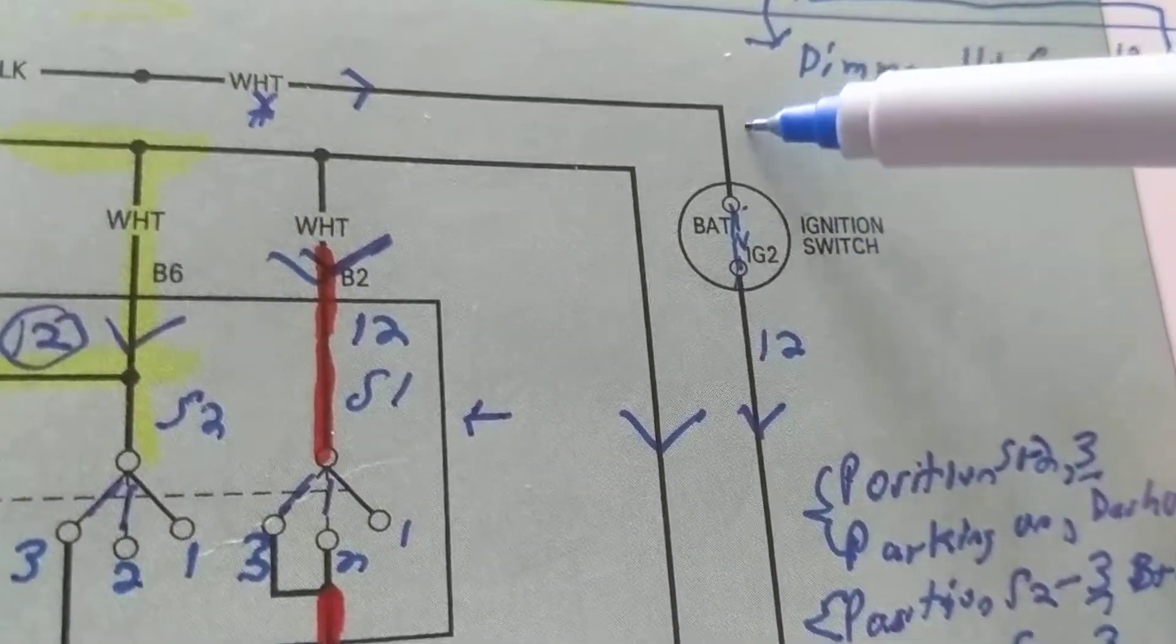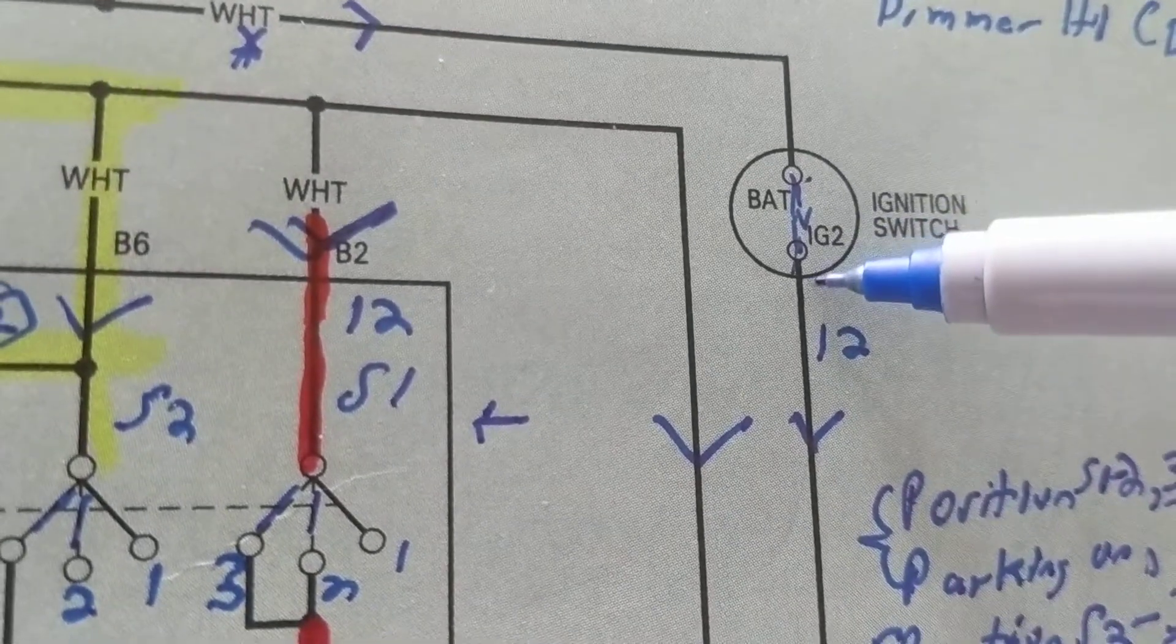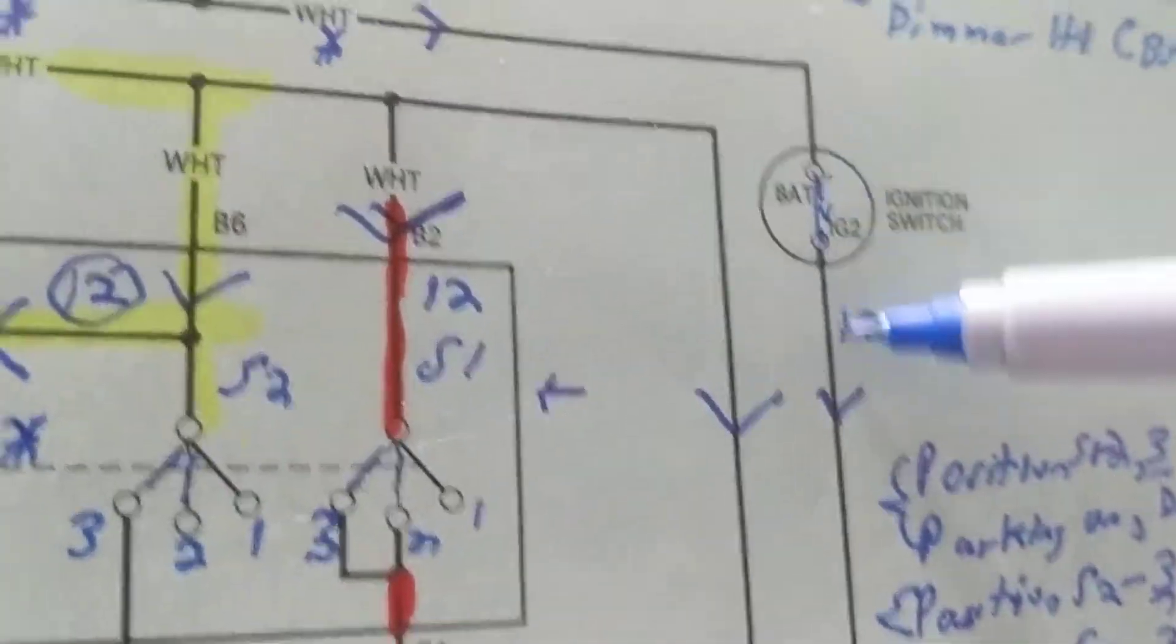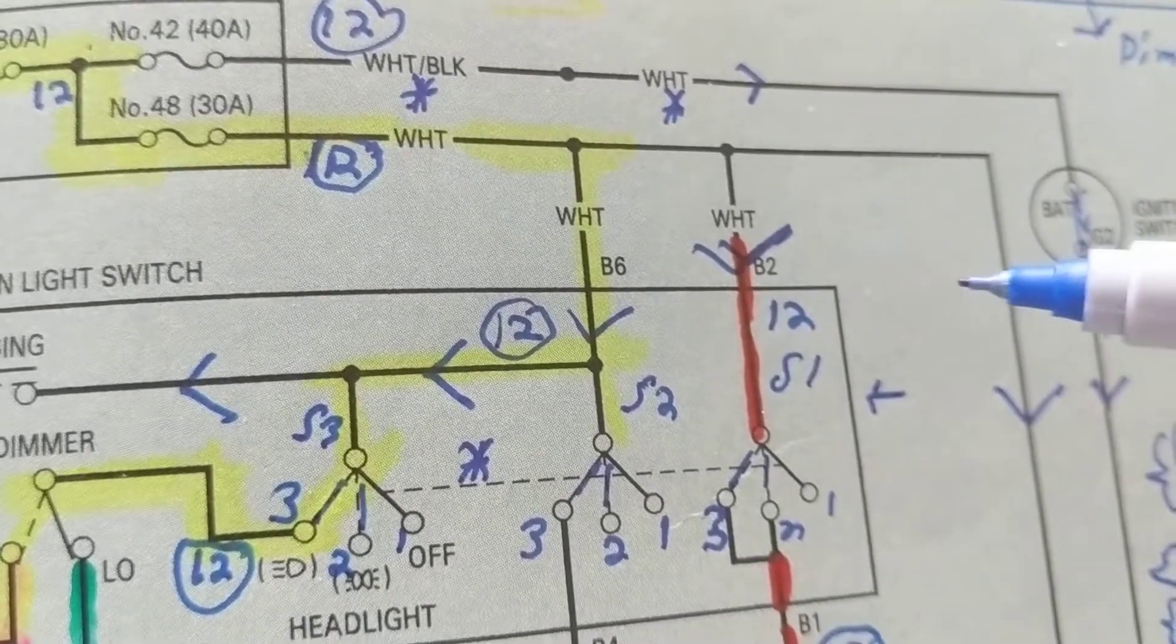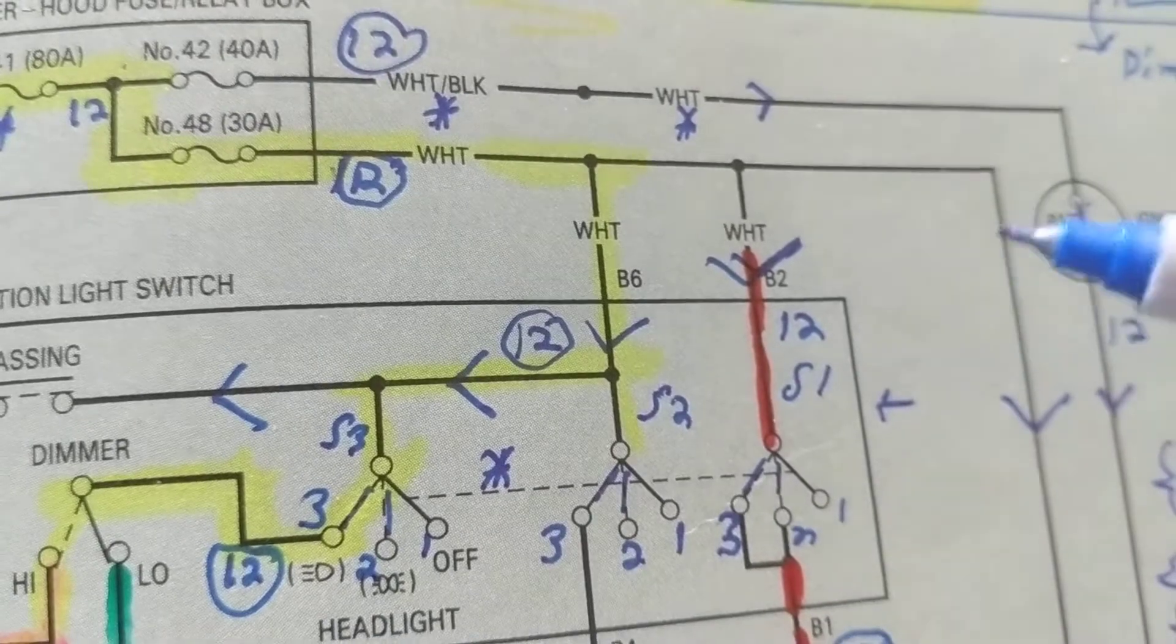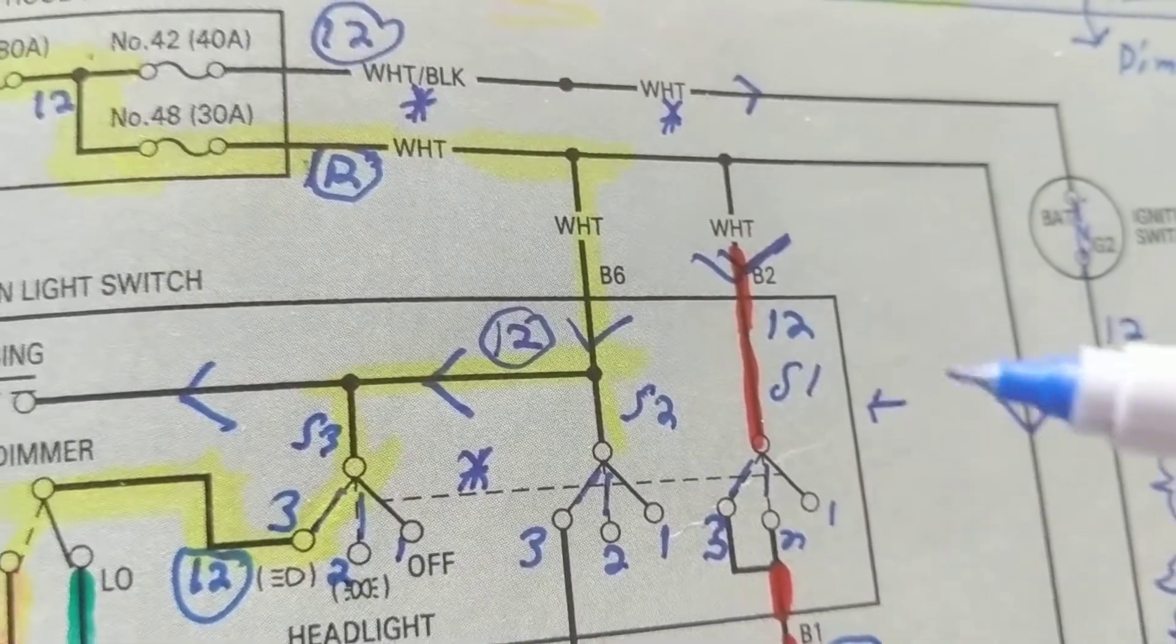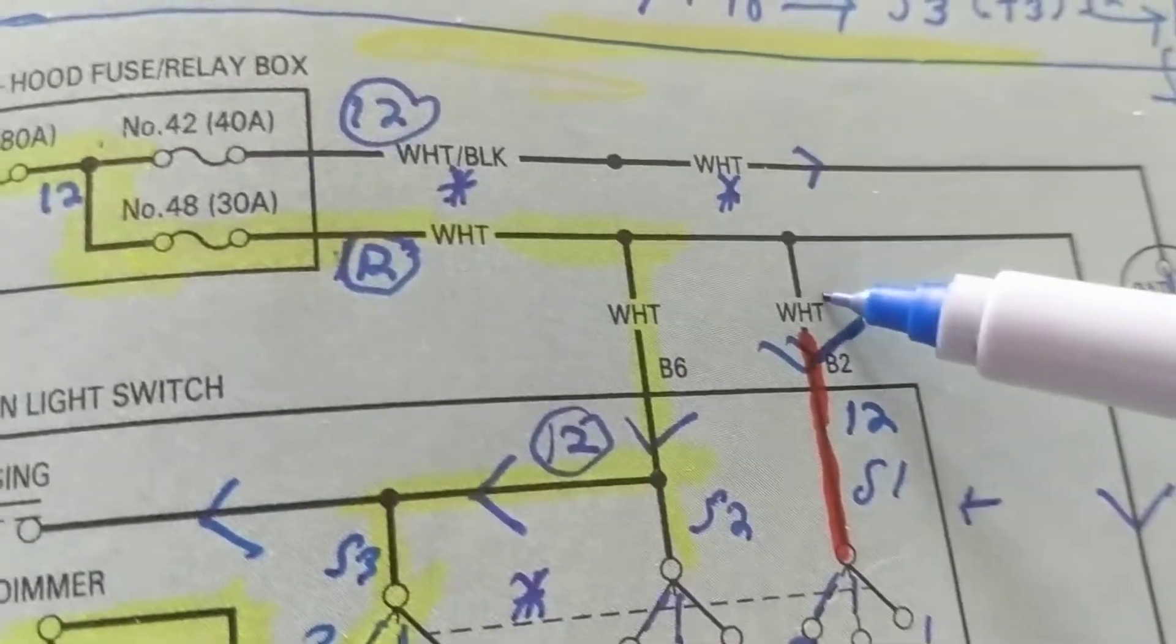Then it goes to an ignition switch. The ignition switch, in battery, and when we crank it, IG2, we're closing the circuit. Remember, we need a closed path for current to flow, and I always teach current, not voltage. Voltage is present in a battery whether it's connected or not.